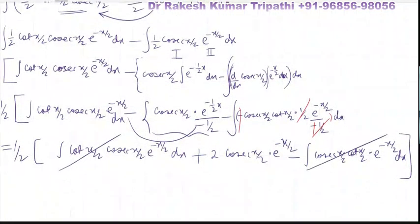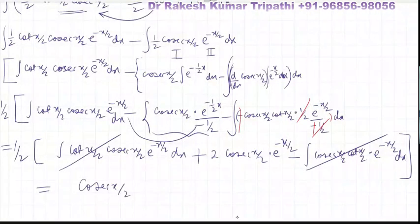So the final answer: (1/2) × 2 = 1, giving cosec(x/2)·e^(-x/2) + C. Finally, the answer to the question is I = cosec(x/2)·e^(-x/2) + C.